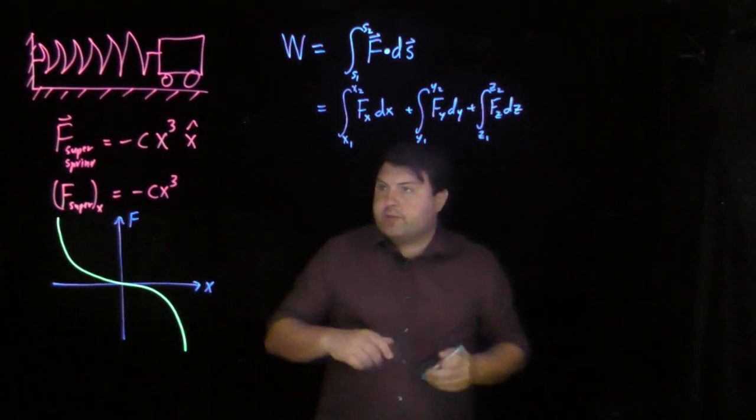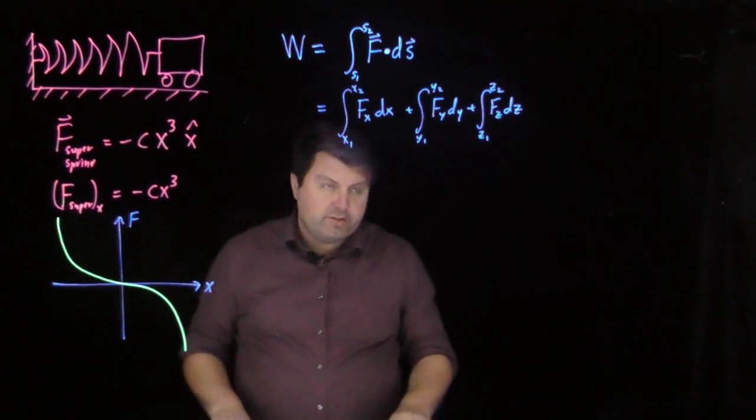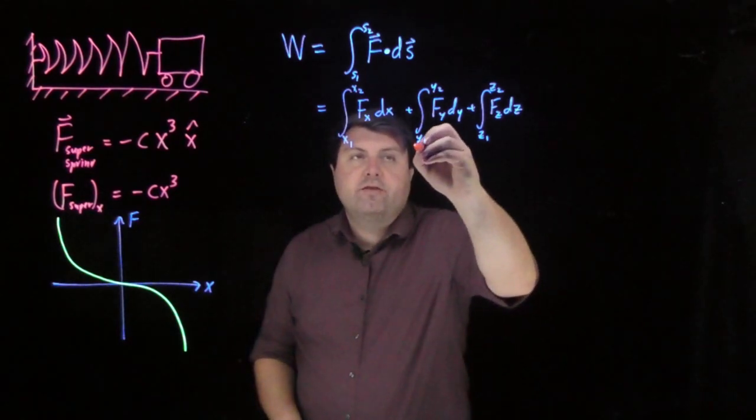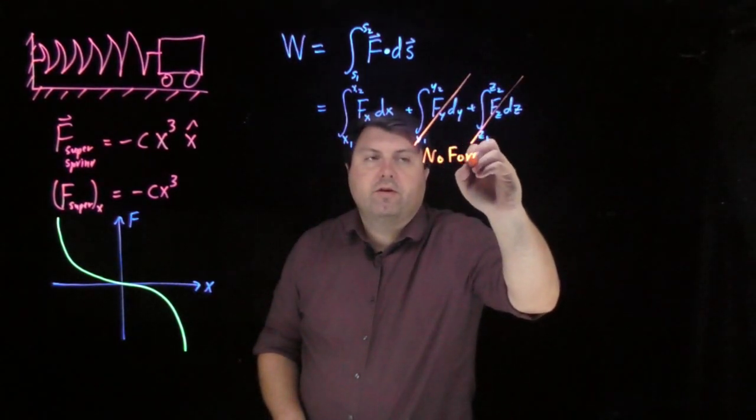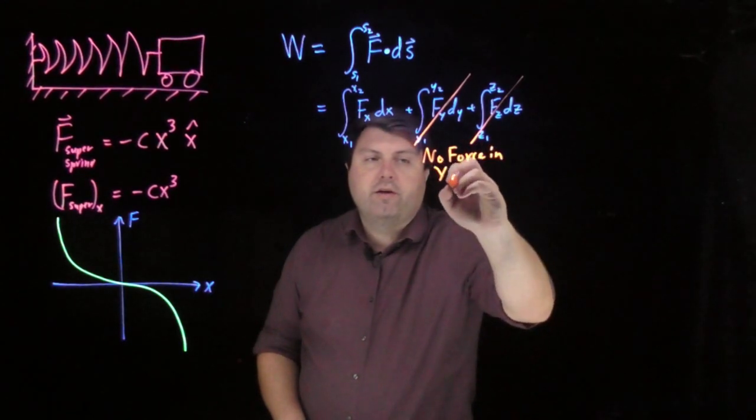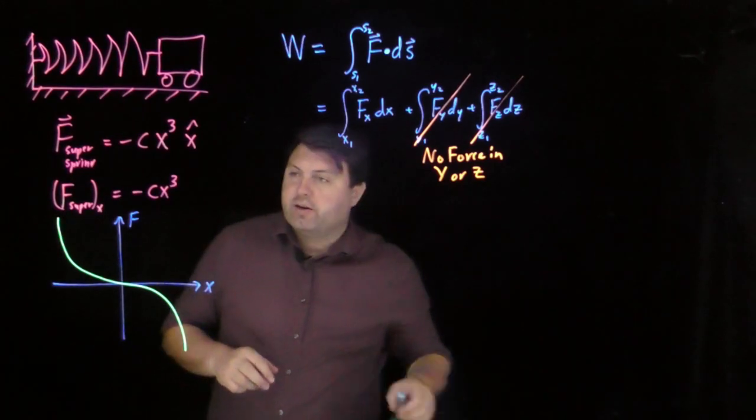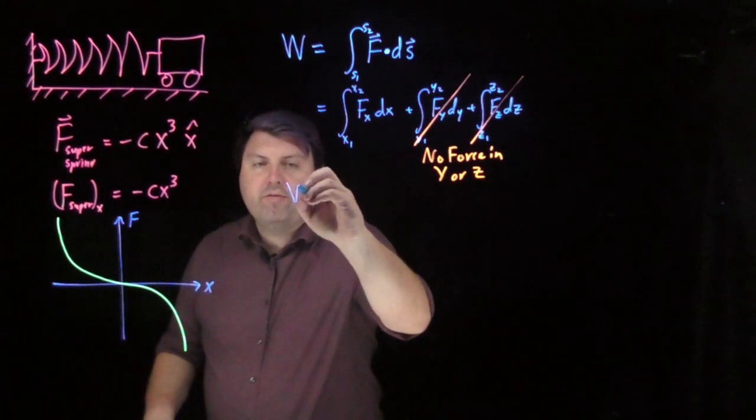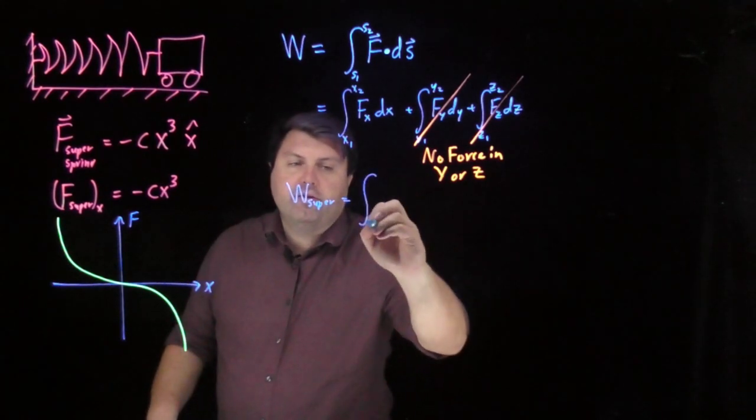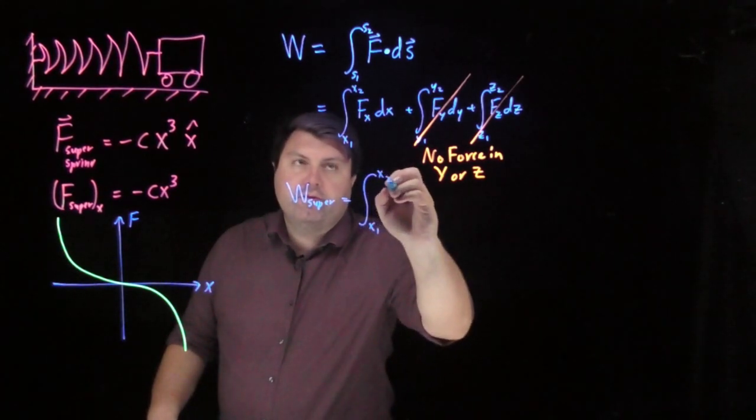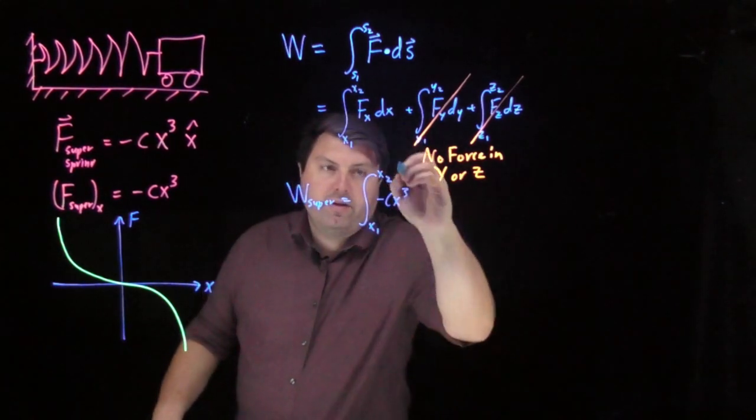Well, if we're doing this, we only have a force in the x. We don't have force in any other directions. So we can cancel these two out because we have no force in the y or the z. And then we just plug in the force from our force equation. So now we have the work from the super spring is the integral from x₁ to x₂ of F(x) equals negative cx³ dx.